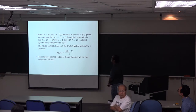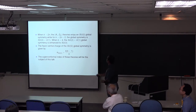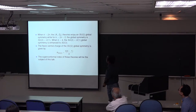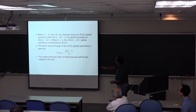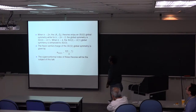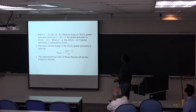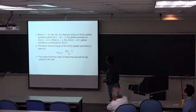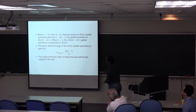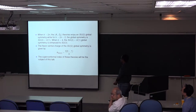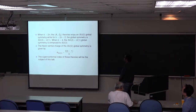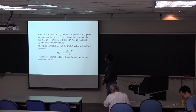When K is even, the A1,DK theories enjoy an SU(2) global symmetry, while for K equals 2N plus 1, there is no such enhancement. For K equals 2N plus 2, the global symmetry is SU(2) times U(1), and when K equals 4, the SU(2) times U(1) global symmetry gets enhanced to SU(3). The flavor central charge of the SU(2) flavor symmetry has also been calculated, and the superconformal index of these theories will be the subject of this talk.